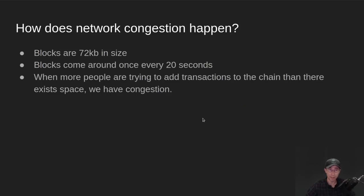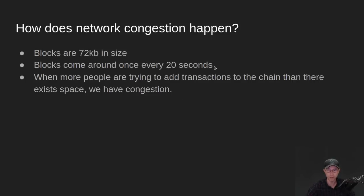So how does network congestion happen? On Cardano, it's a blockchain. The blocks are only 72 kilobytes in size, and they come around on average every 20 seconds or so. And so as you can see, the blockchain can only grow so much over time.